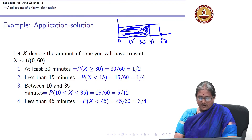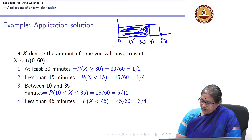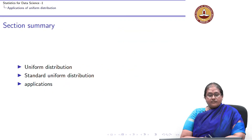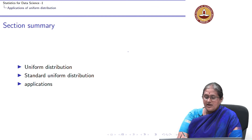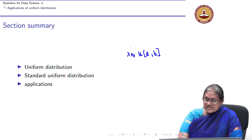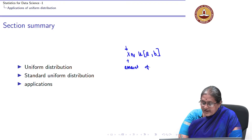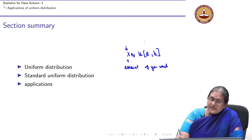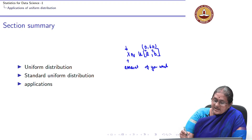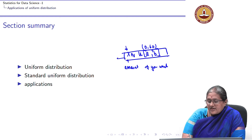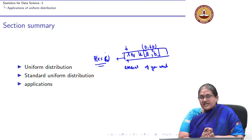In summary, we looked at what a uniform random variable and standard uniform distribution are, and explored a simple application. The key steps are: define the variable, identify the parameters A and B from the problem context — here A = 0 and B = 60 — and then translate questions into probability statements to answer them.